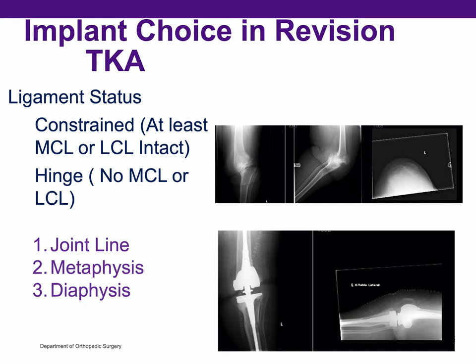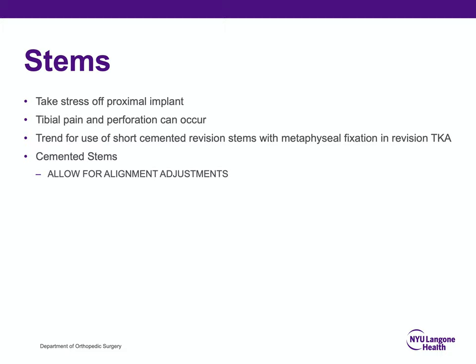If the narrative reflects instability of the medial and lateral collateral ligaments, or if there's significant bone loss or deformity making it likely unstable, then a hinge knee replacement prosthesis may be indicated. Stems can cause tibial pain and perforation can occur. There is a trend toward the use of shorter cemented stems in revision knee arthroplasty with metaphyseal fixation to avoid stem tibial pain. Cemented stems do allow for some alignment adjustments due to the natural bowing of the femur and tibia, as well as any deformities, and provide protection in the very osteoporotic patient.